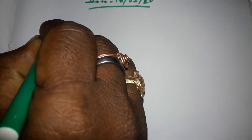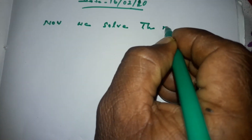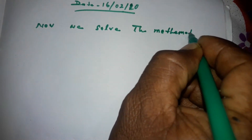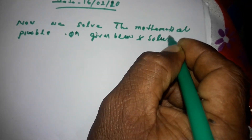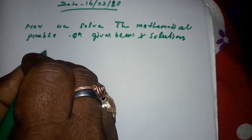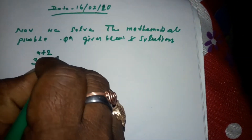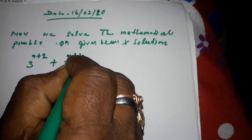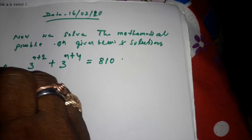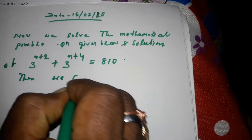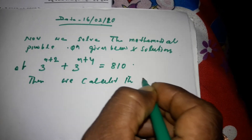Now we solve the mathematical problem. The question is: if 3 to the power x plus 2, plus 3 to the power x plus 4, equals 810, then we calculate the value of x.